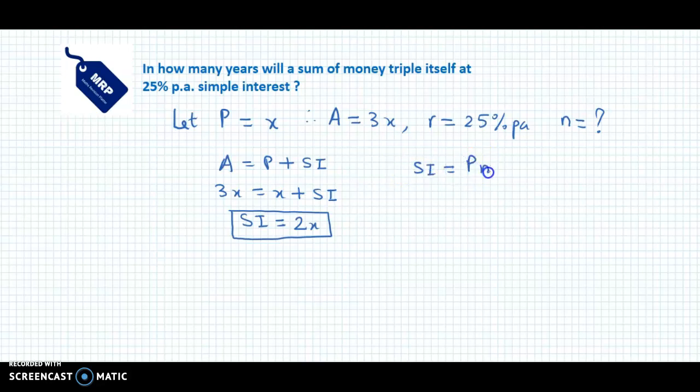The simple interest is 2x, the principal is x, n is missing, and the rate of interest is 25% per annum, so that's 25 divided by 100.